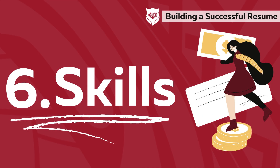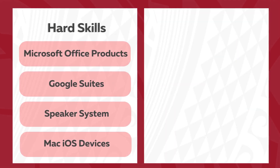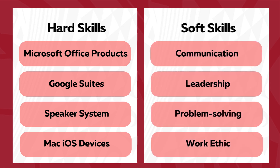Number six, your skills. You want a mix of hard and soft skills on your resume. Hard skills are technical skills that can be learned and measured, such as proficiency in Microsoft Office products, Google Suites, or any specific items you know how to operate such as a speaker system or Mac iOS devices. Soft skills are interpersonal skills that are personality-based and can be transferred easily between jobs. This includes, but is not limited to, communication, leadership, problem solving, work ethic, and much more.